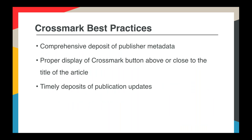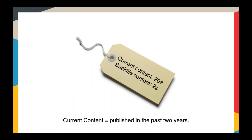I won't go into full technical detail today, but here are the best practices for participation. Any Crossref member in good standing can participate in Crossmark. We ask that you deposit good quality and comprehensive metadata so the Crossmark box is well populated — while depositing funding data and ORCIDs are not a requirement, we strongly encourage it. You need to commit to displaying the Crossmark button next to article titles and in your PDFs, and to timely updates if any content changes. There are additional charges: 20 cents per current content DOI and 2 cents for backfile content older than 2 years.